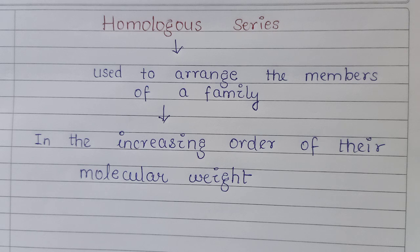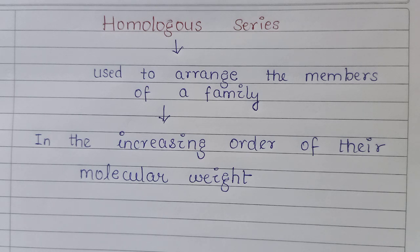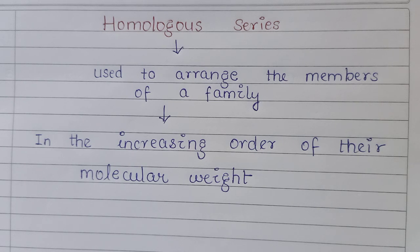A homologous series may be defined as a series of similar constituent organic compounds in which the members possess the same functional group, have similar or almost similar chemical properties, can be represented by the same general formula, and two consecutive members differ by a CH₂ group in their molecular formula.